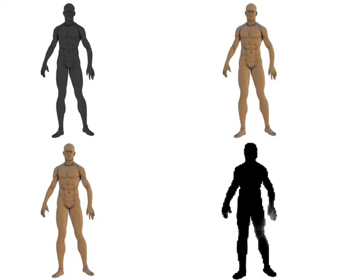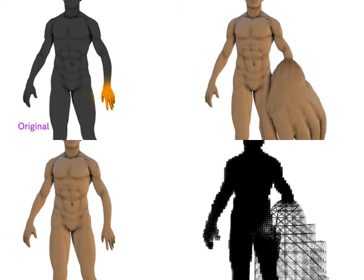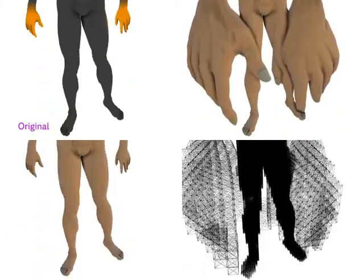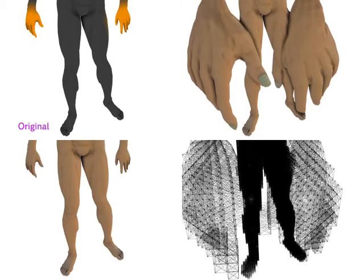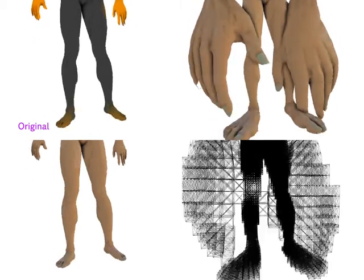Here you can see a real-time modeling session with our interactive user interface. In the upper left corner, the original model is displayed with importance depicted by the surface color. Initially, all regions are equally important, which is indicated by a gray color.